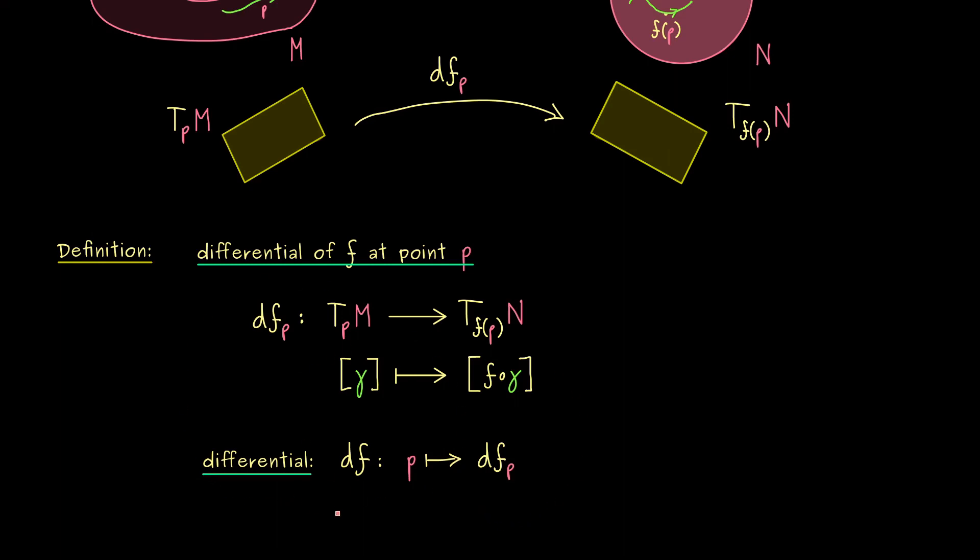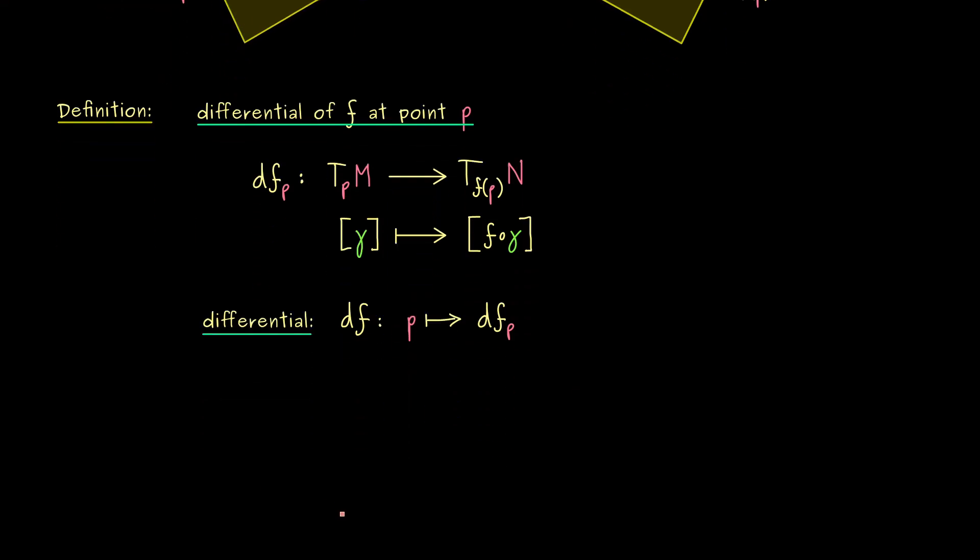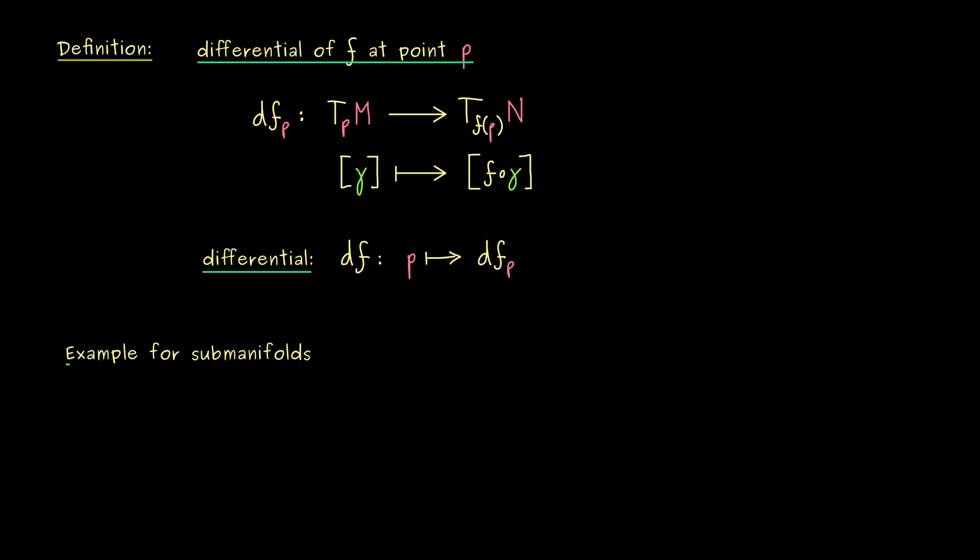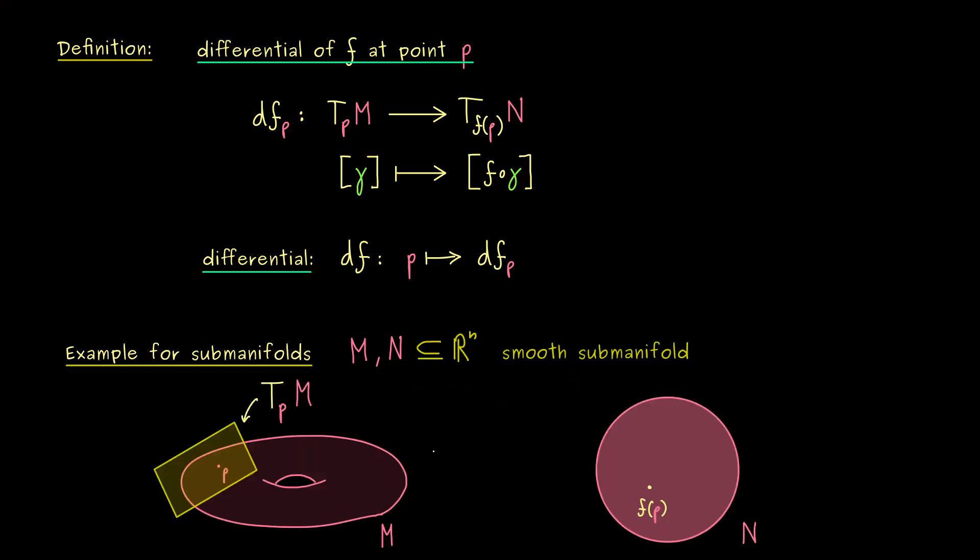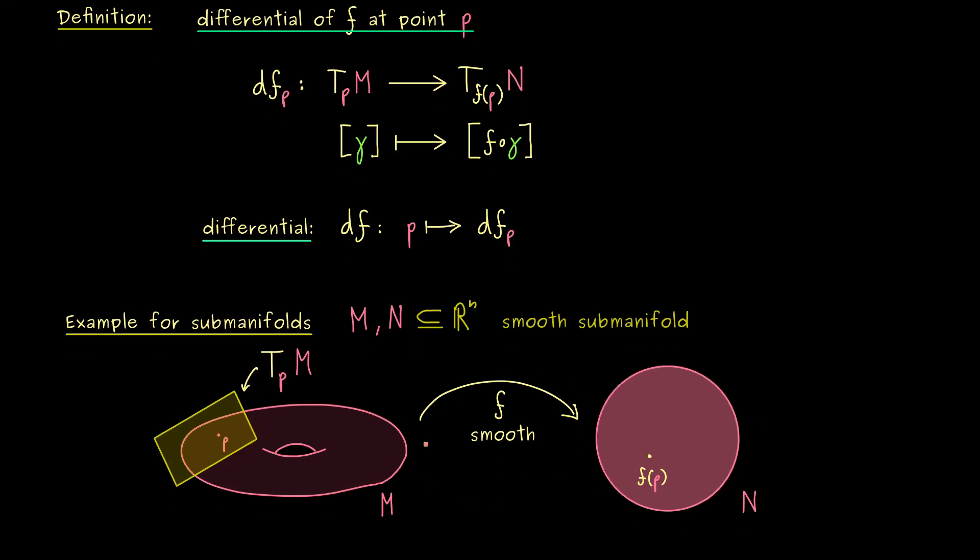To get an idea what this differential actually means, let's look at an example, in particular submanifolds. We do that because for submanifolds the tangent space is much easier to grasp. Let's consider M and N as smooth manifolds embedded into R^n, a smooth submanifold of R^n. The picture should be the same as before: M on the left hand side and N on the right hand side, with a smooth map f from left to right. The good thing is, on the right hand side instead of our abstract tangent space, we can use the concrete one for submanifolds. For this one we had a special notation: we just put 'sub' in the upper index of the tangent space.